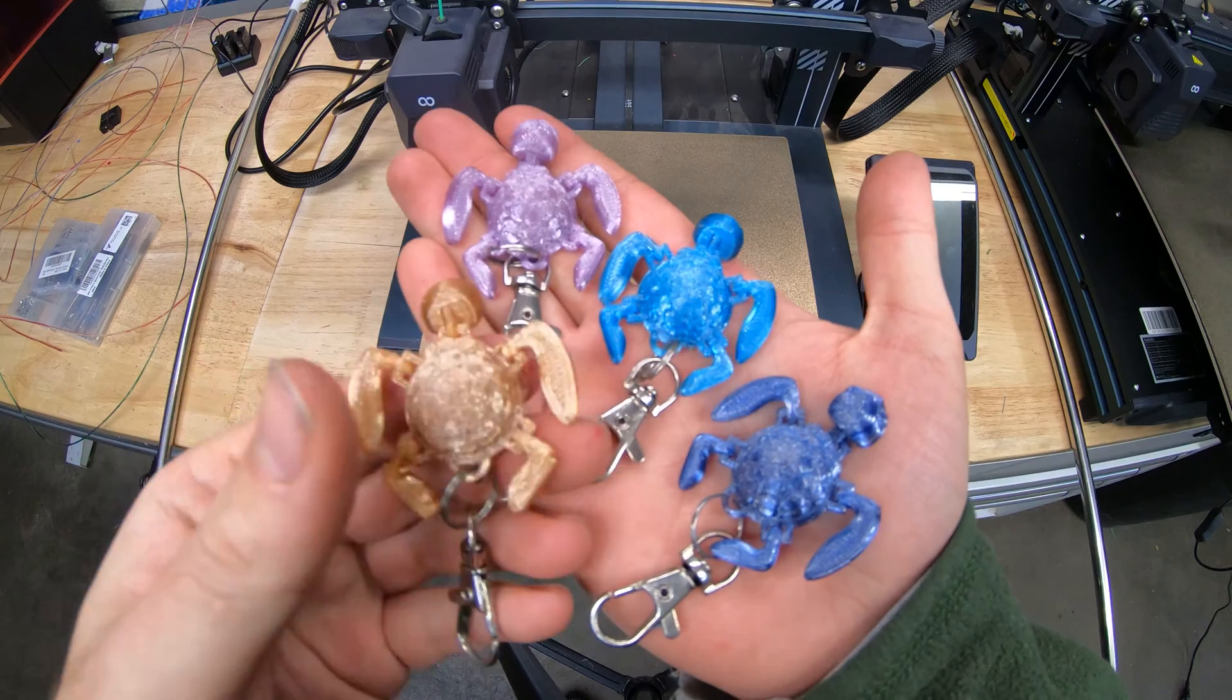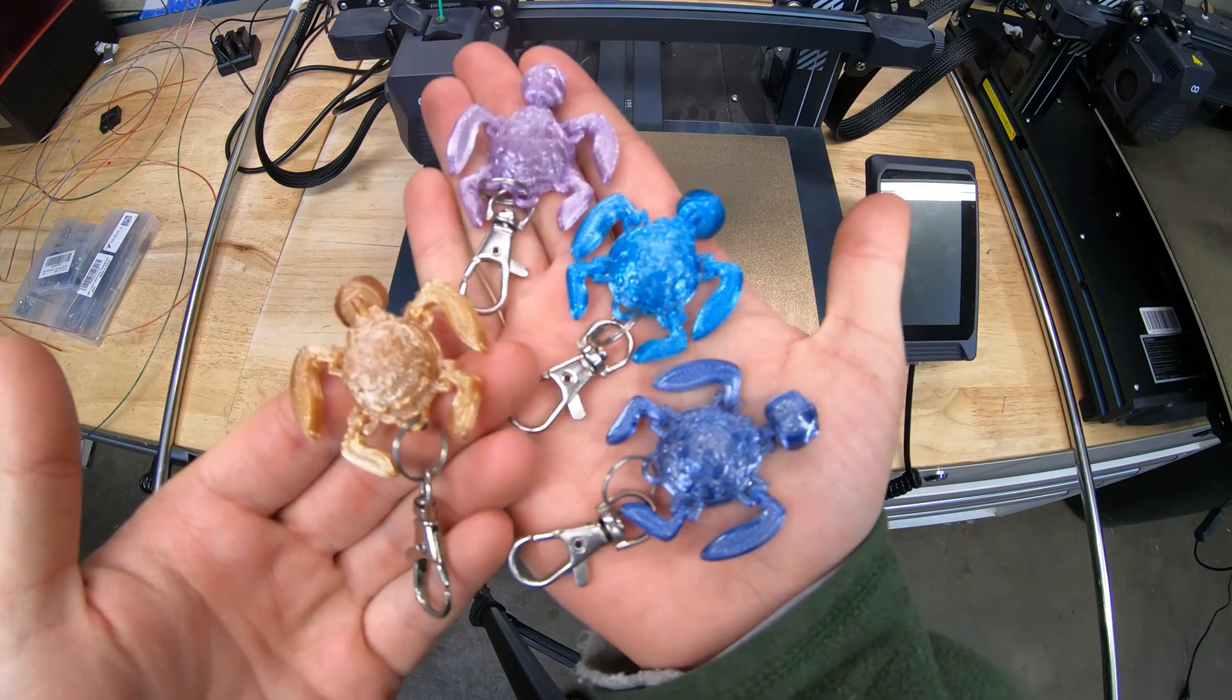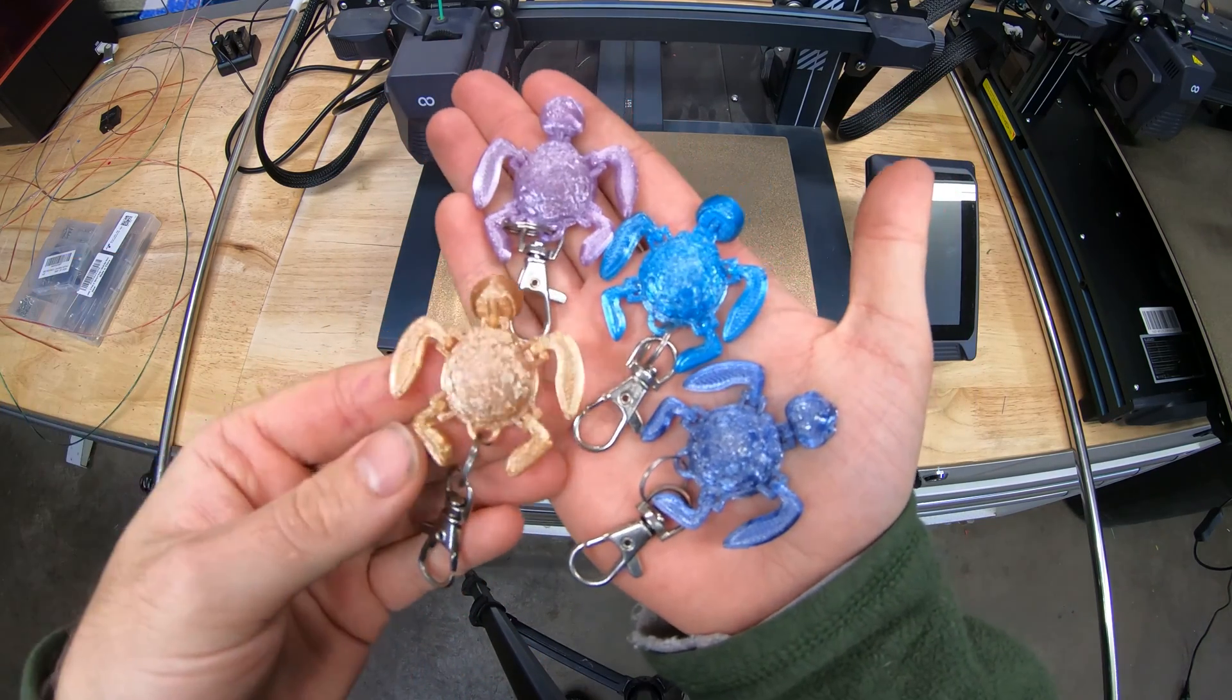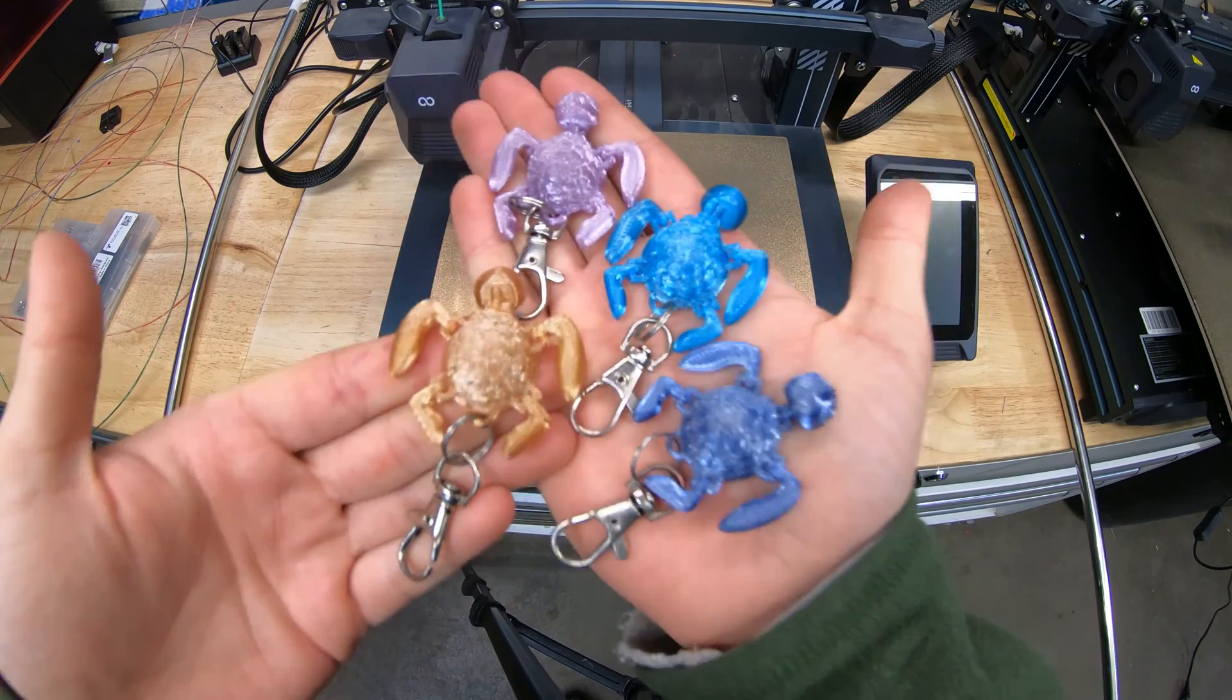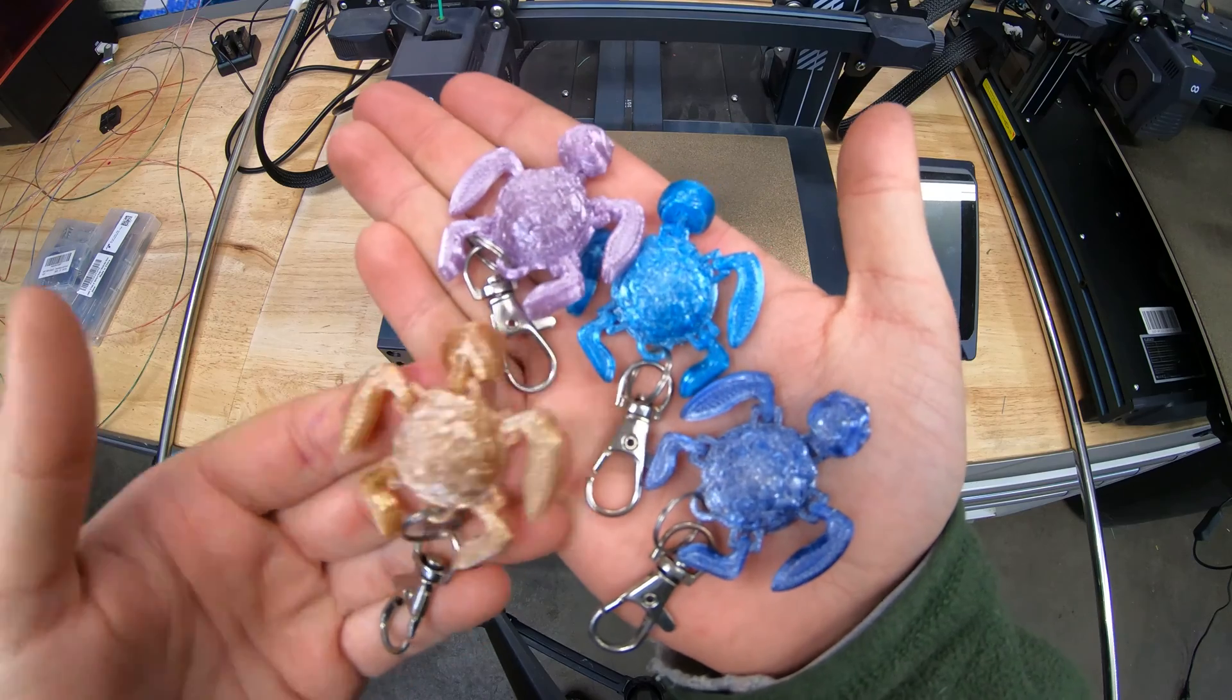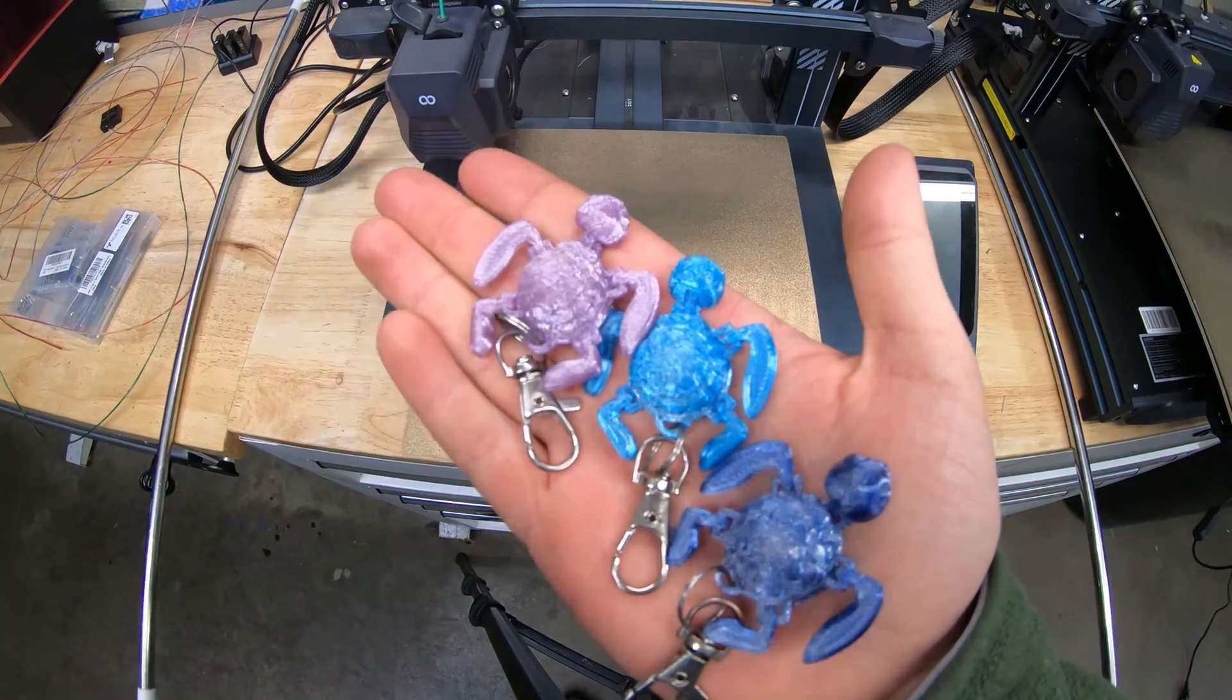Also, the colors that you choose will usually come out a different color once you 3D print with it. For example, this blue turtle was actually made with a green marker. I think this might have something to do with the crystallization of the PET. It adds like a white tint to it, which is kind of cool because it gives you some cool color effects.